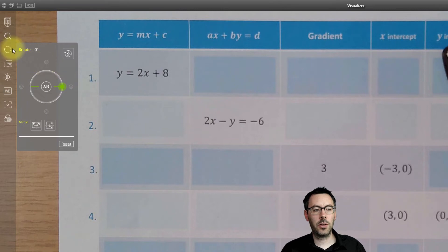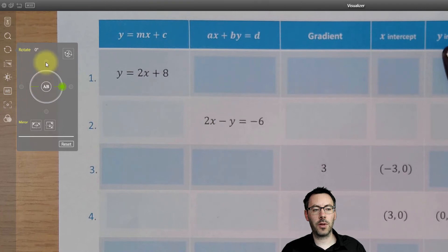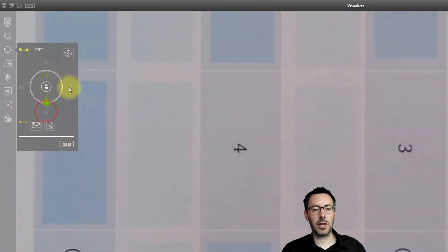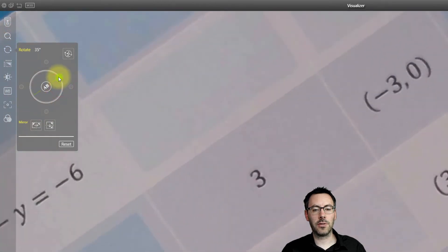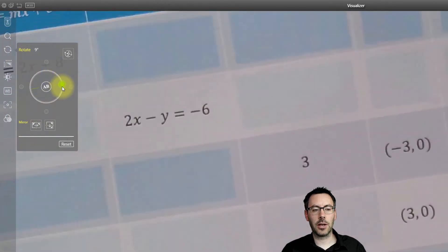Then we've got a rotate button. If your visualizer is positioned on your desk so that you can't rotate it easily to see what you want to see, you can use this to rotate. You can either select 90, 180, 270, or zero degrees, or you can do a free rotate for any angle you want.